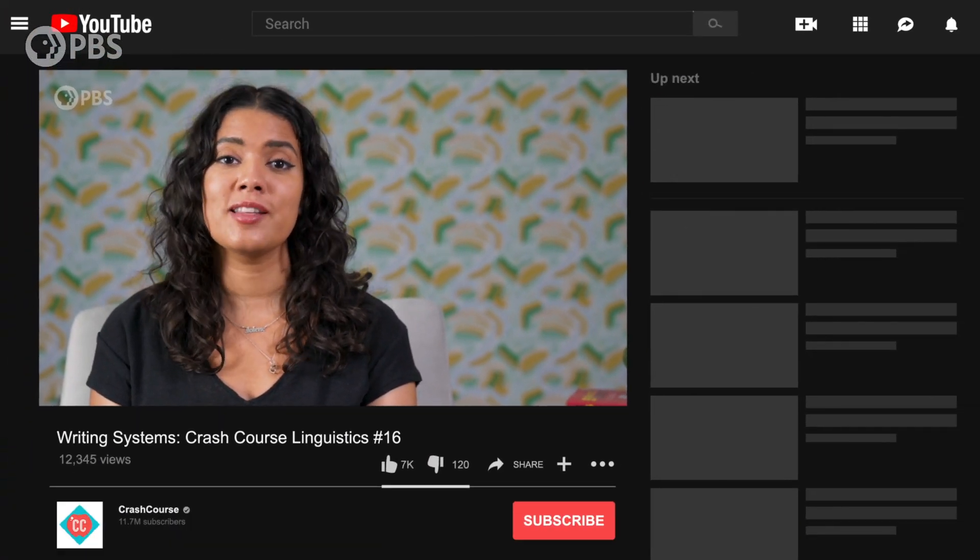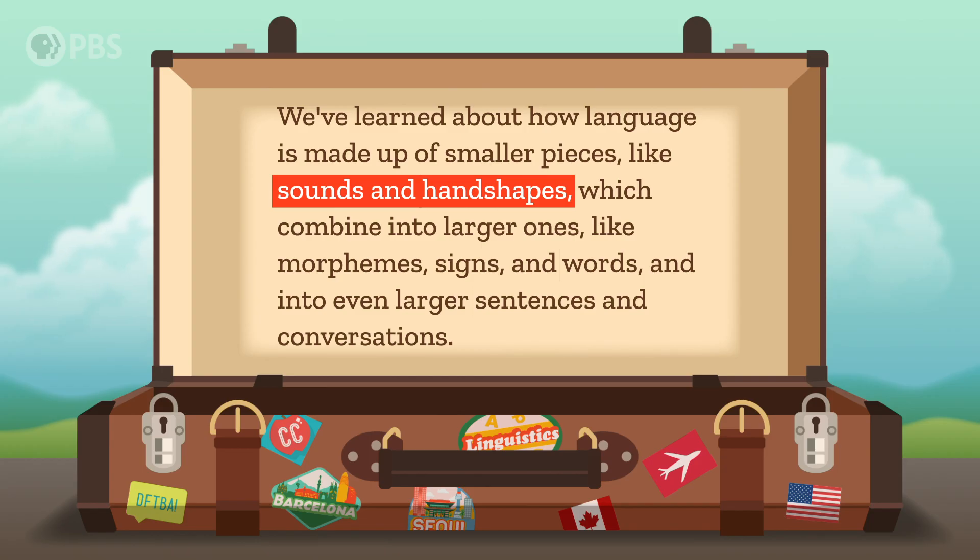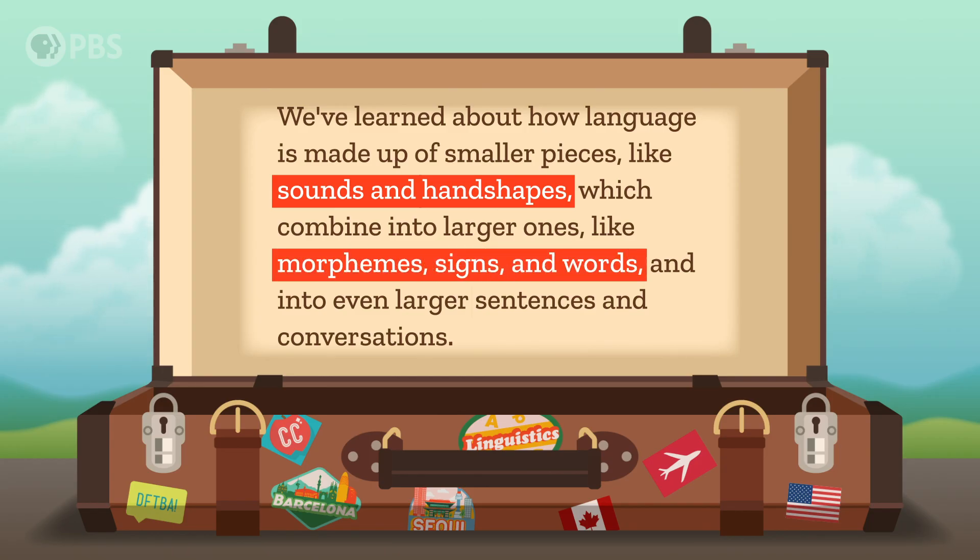We can see our writing system evolving before our eyes. People also use more recent technology to sidestep the need for writing altogether. For languages that haven't historically been written down as often, including many signed languages, people often send audio or video files through social media. Here in Crash Course Linguistics, we've learned about how language is made up of smaller pieces, like sounds and hand shapes, which combine into larger ones like morphemes, signs, and words, and into even larger sentences and conversations. We've also learned that all forms of language are worth getting excited about. Language is the world's greatest collaborative project, and we're all participating in it every day.